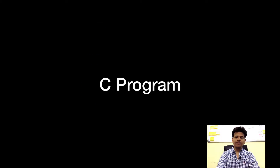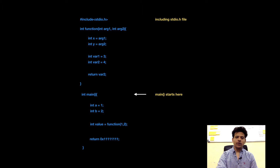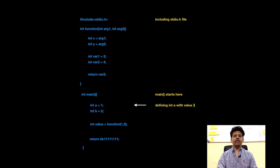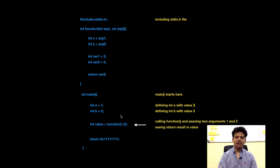Let's look at our C program. We are including stdio.h file. After that, we are going to main. Main is defining integer a, value is 1. After that, second variable, integer b, value 2. Then main is calling function and passing two arguments, 1 and 2.